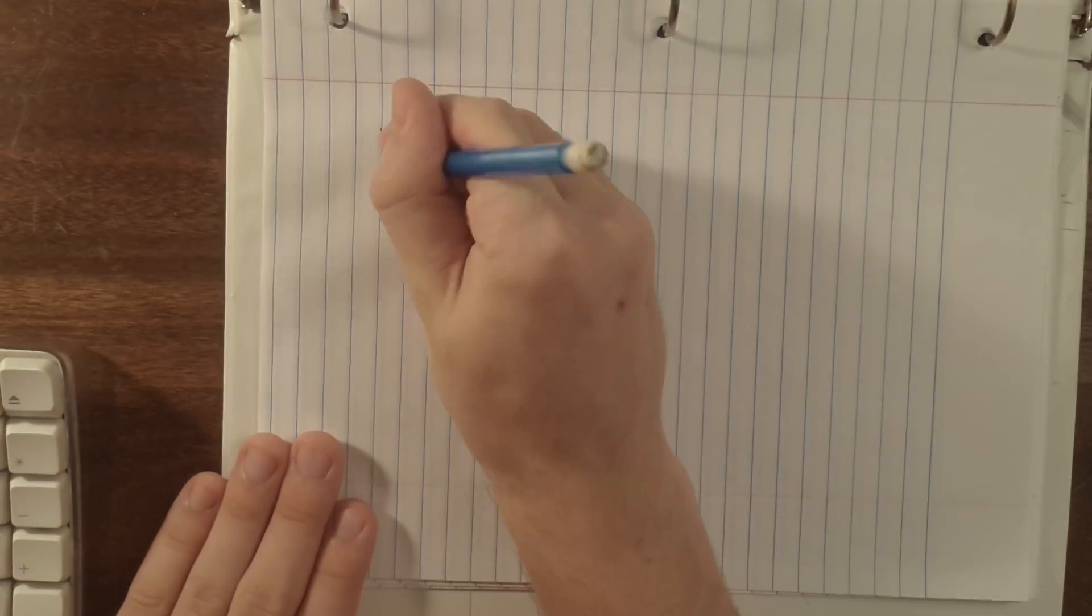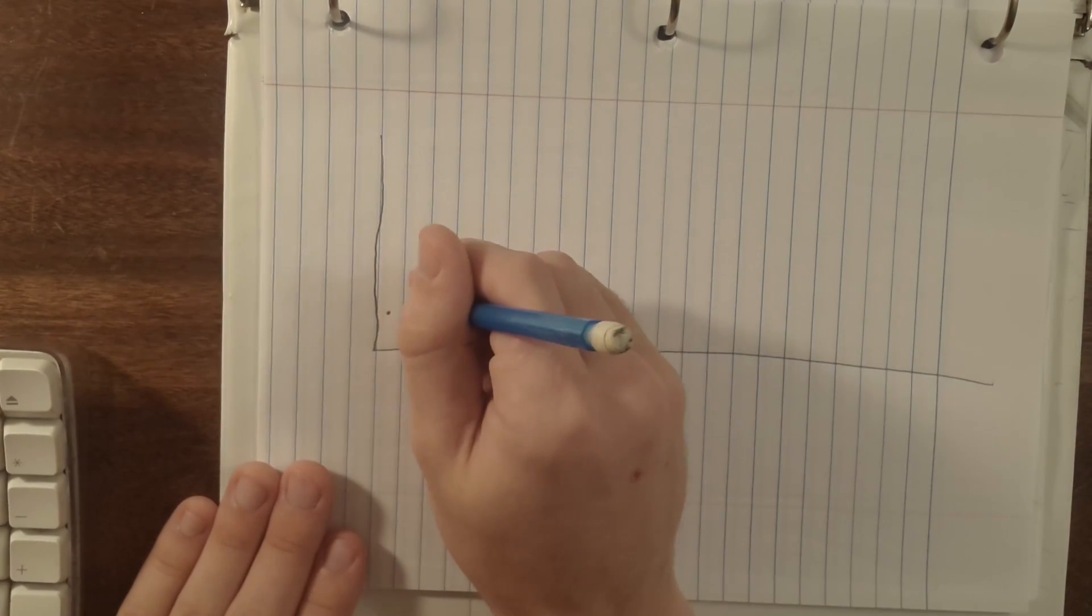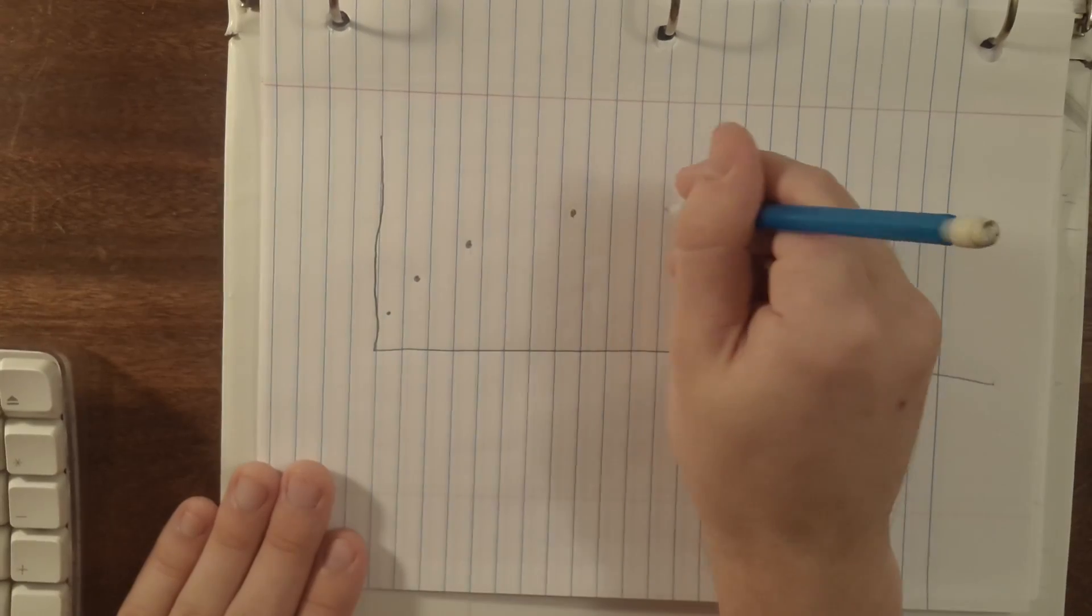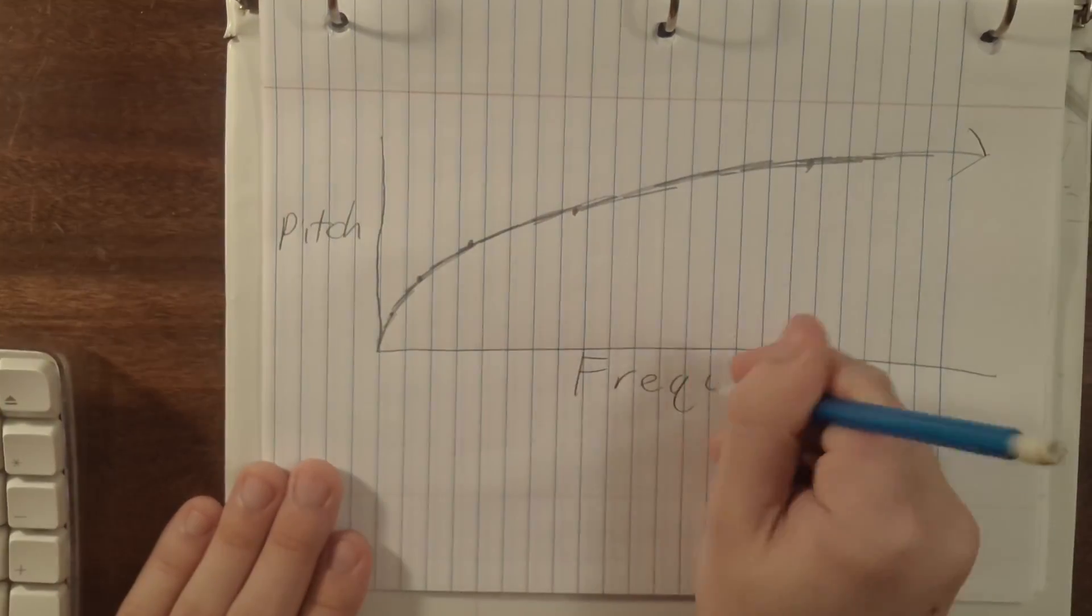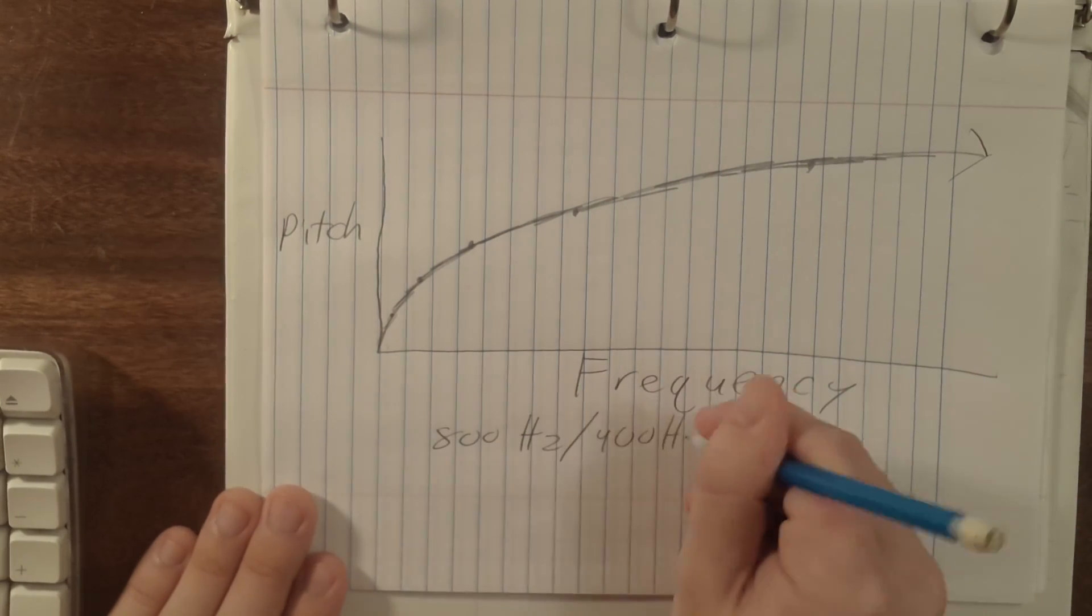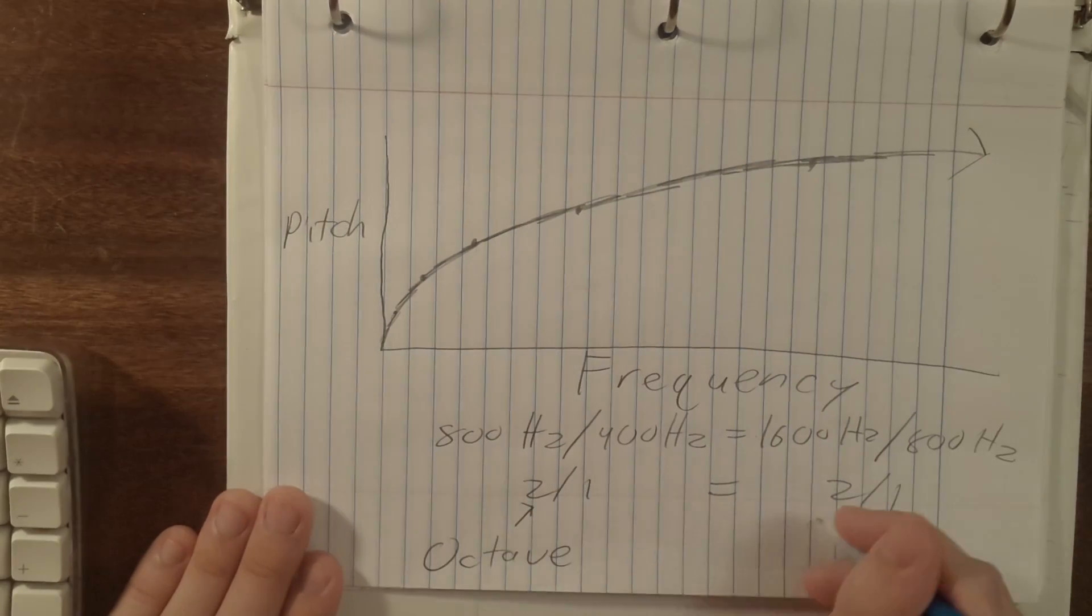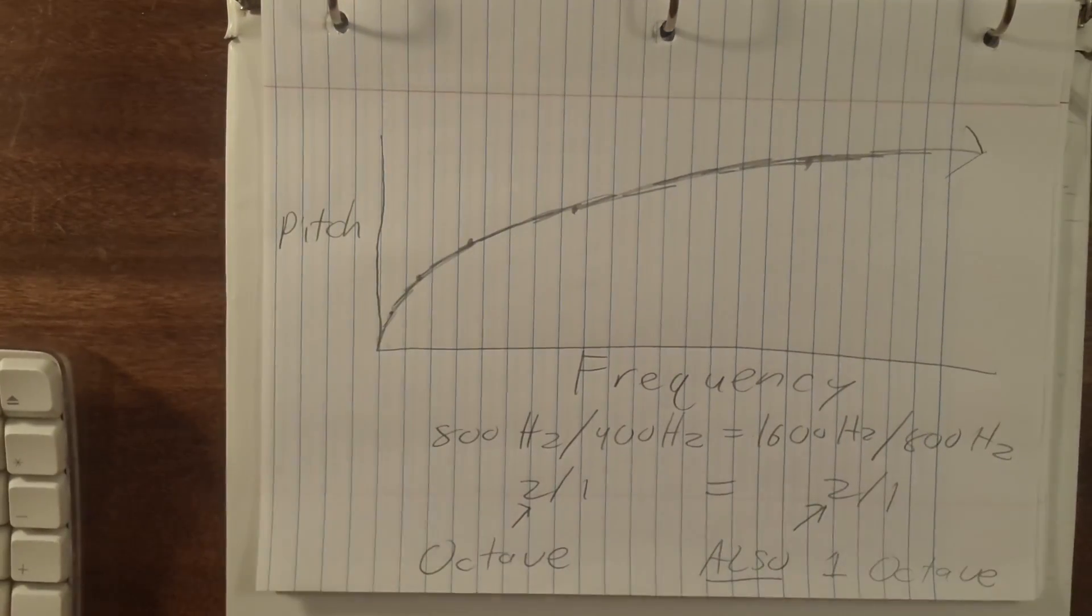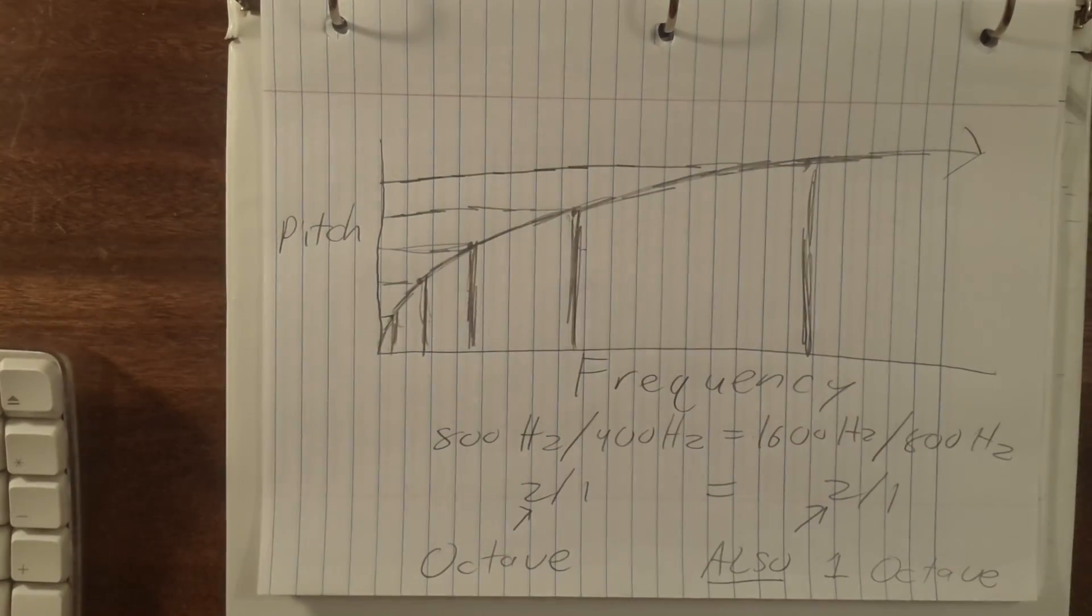Pitch and frequency are related logarithmically, meaning that linear changes in pitch, like going up an octave, are actually multiplications of frequency. Octaves specifically are a doubling of frequency. For instance, from 400 to 800 Hertz is heard as an octave, and so is from 800 Hertz to 1600 Hertz, because each is a multiplication by two.